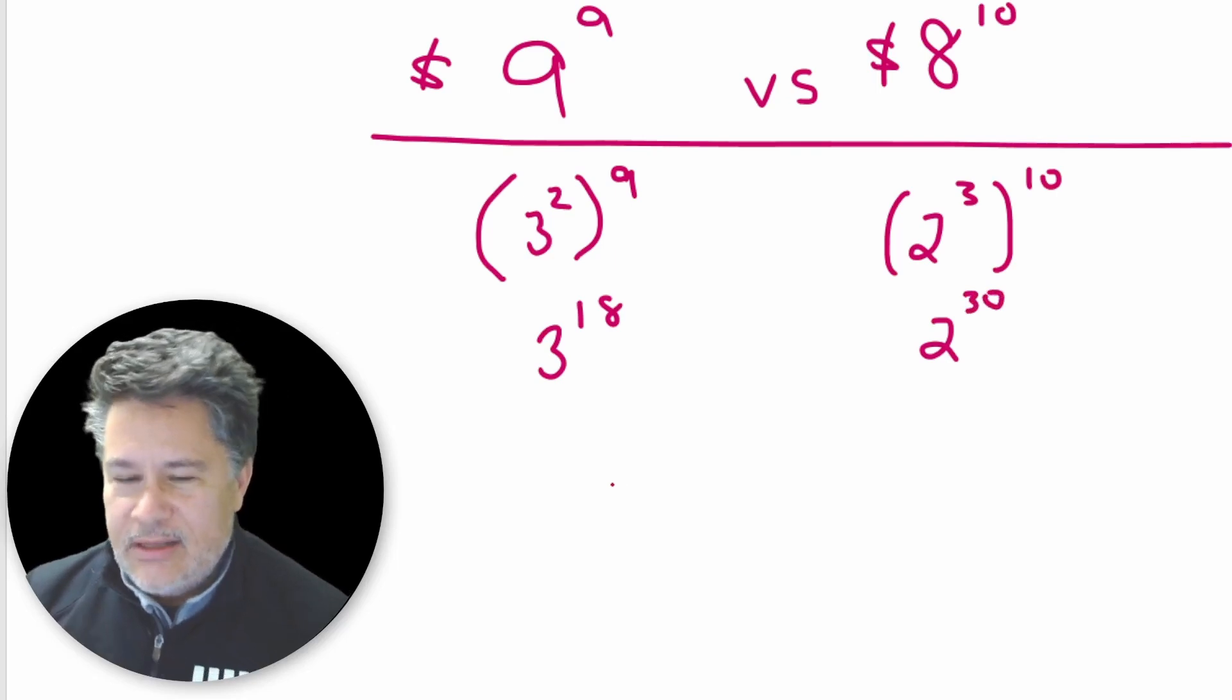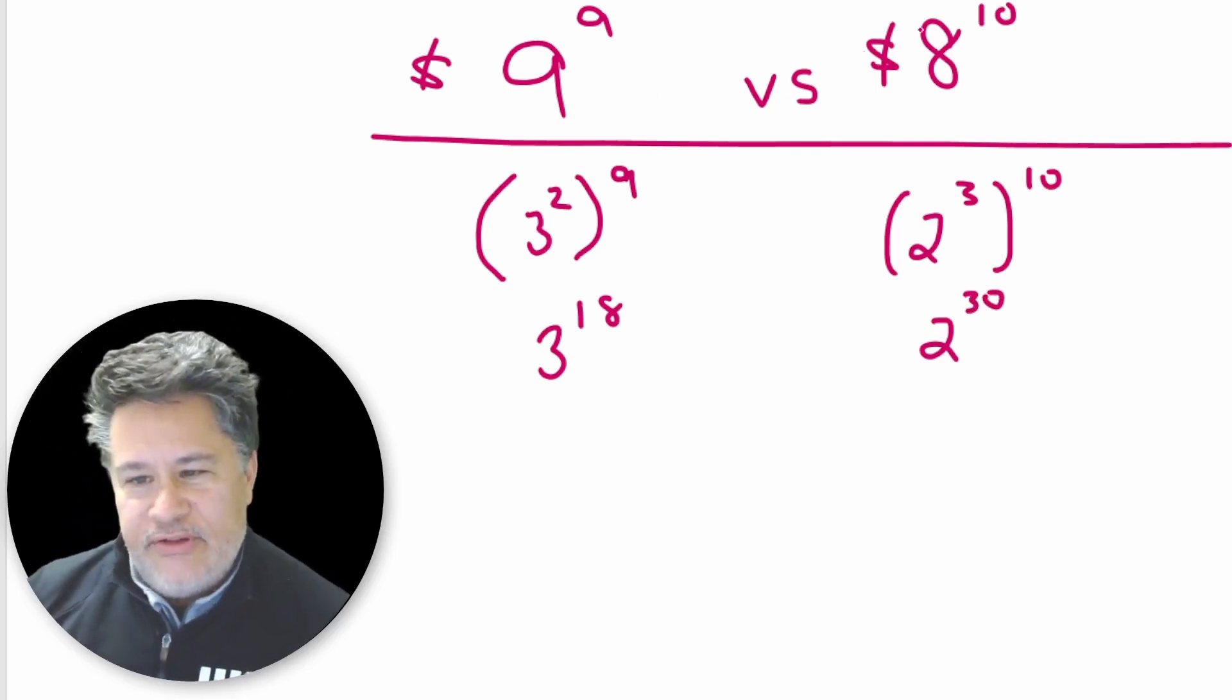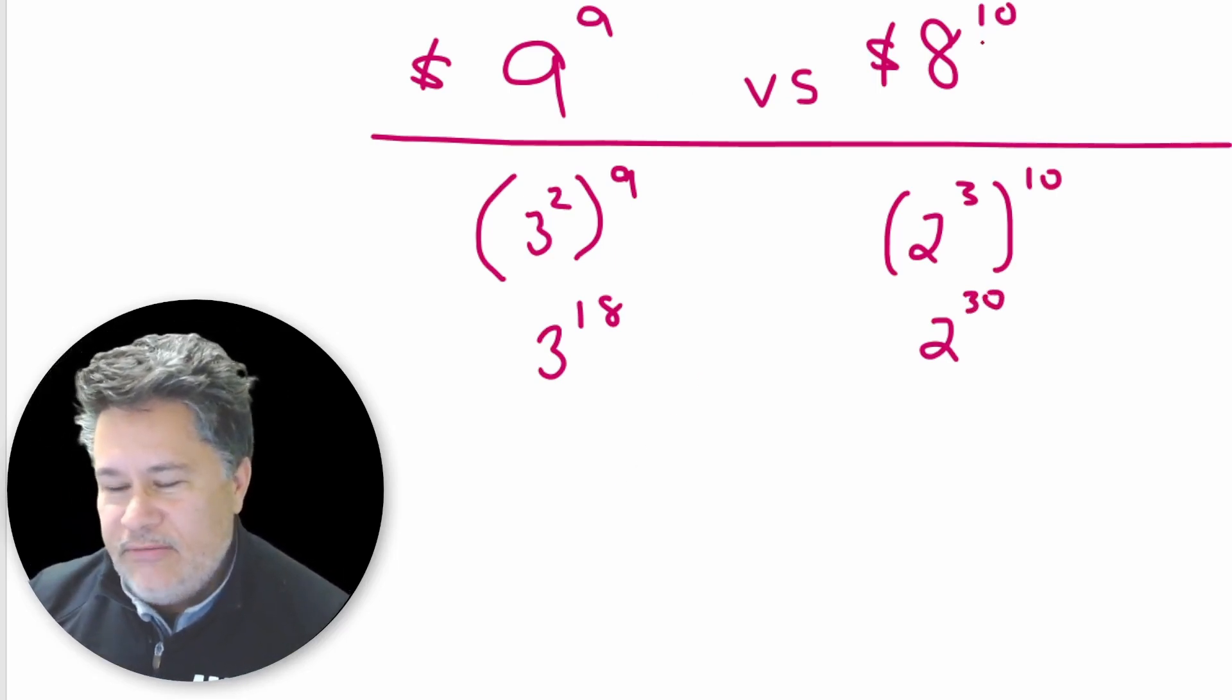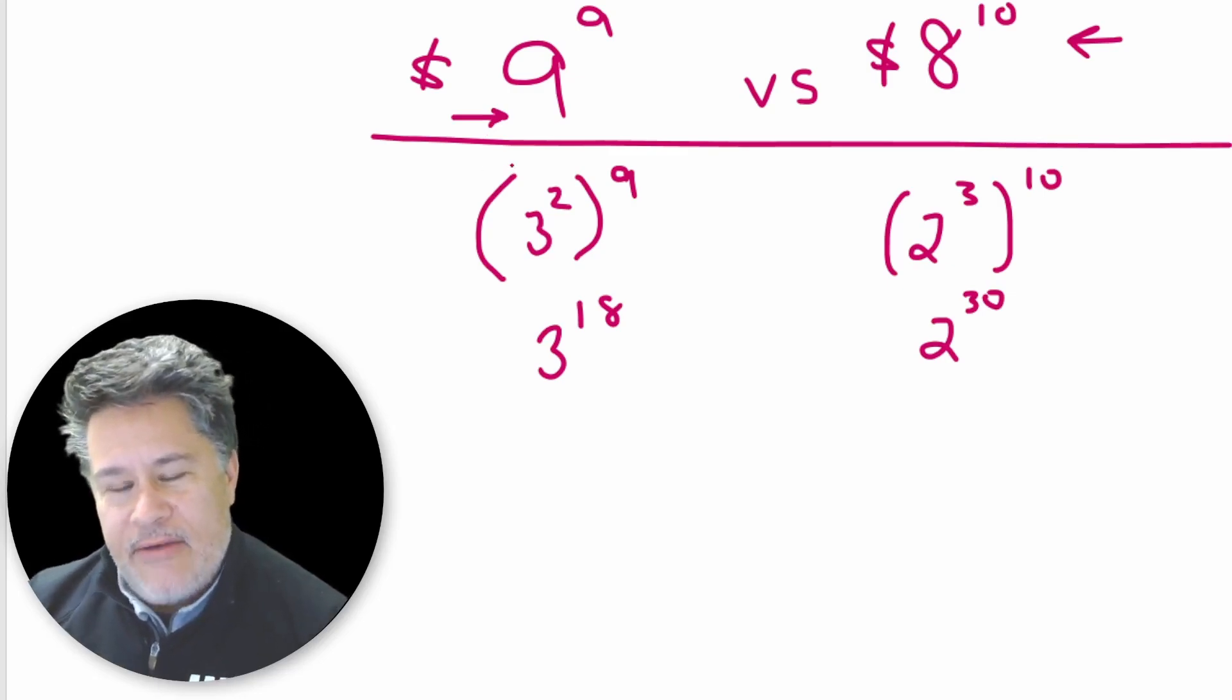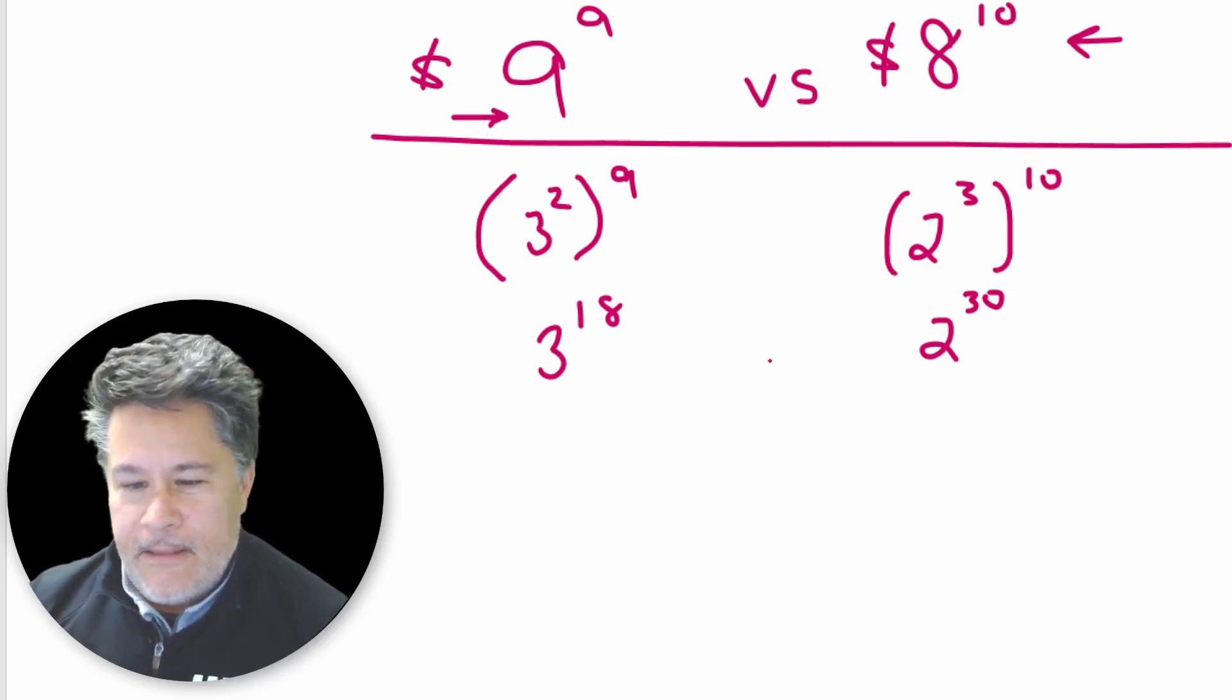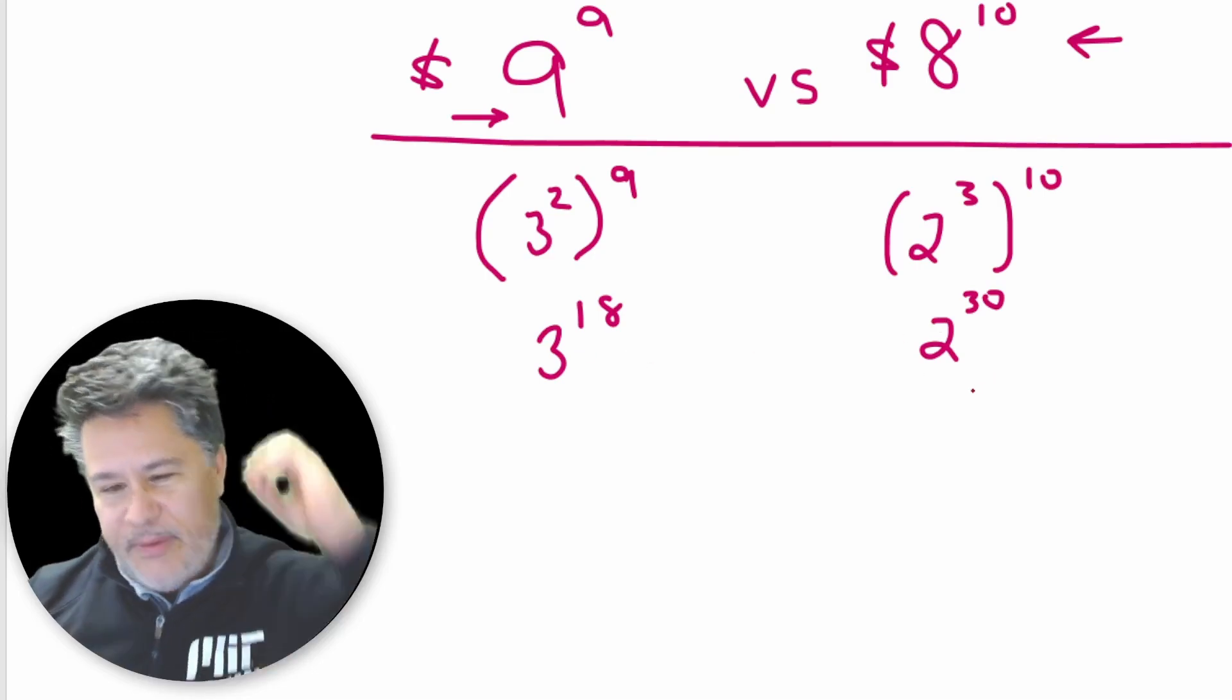Still not really clear, is it? You've got obviously the ten is a higher exponent in the original problem right here. But then the nine is the bigger base. And it's not exactly clear how they're going to kind of trade off with one another. But we are going to make it super clear. So now we've got the three to the eighteenth and the two to the thirtieth. So which is bigger?